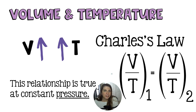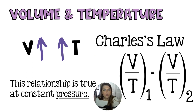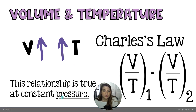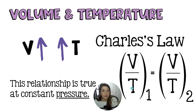Volume and temperature is a little bit different. As volume goes up, so does temperature, and as temperature goes up, so does volume — and the reverse is also true. This relationship holds at a constant pressure. So the volume divided by the temperature before equals the volume divided by the temperature after.